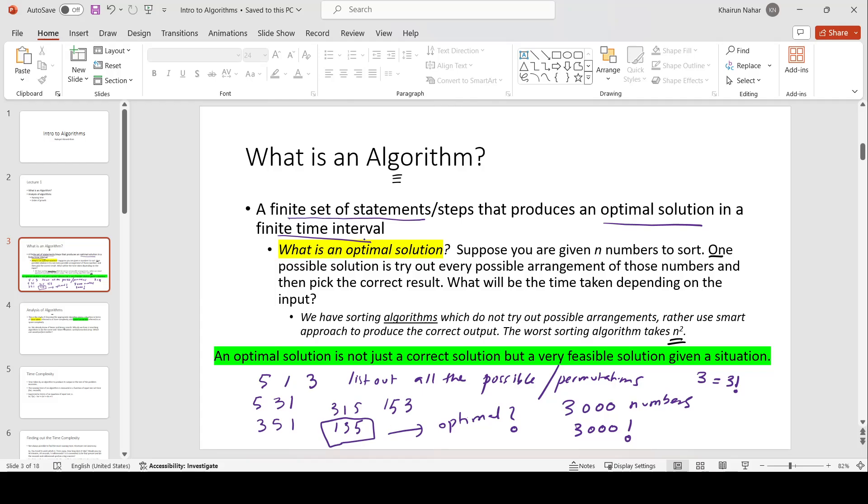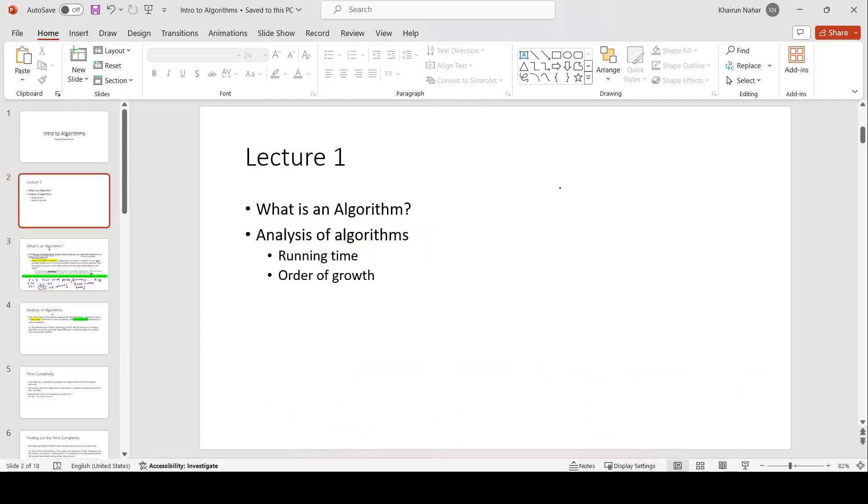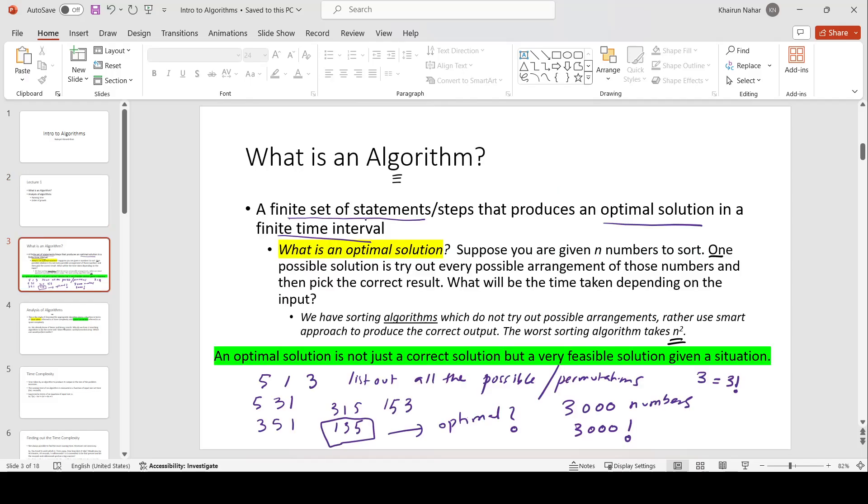Third, an algorithm must produce the correct output in a finite time interval. That is, it should not run forever. So, when we have this specific set of steps that produces the correct output and a feasible output given a situation in some finite time interval, we call that an algorithm.